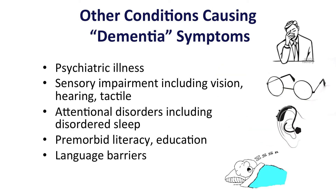There are other conditions that cause symptoms that mimic dementia or cognitive change. These can include psychiatric illness, sensory impairment including changes in vision, hearing, or sensation, and disorders that affect attention including disordered sleeping. Also, premorbid literacy, education, and language differences may contribute to an impression that a dementia is present.